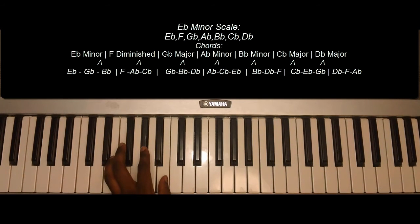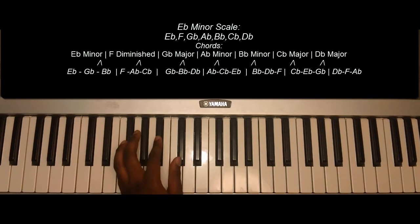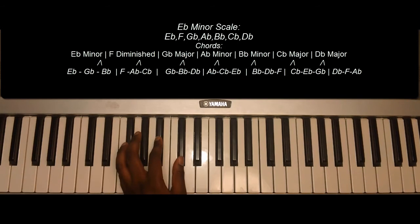F diminished: F, A-flat, C-flat. G-flat: G-flat, B-flat, and D-flat.